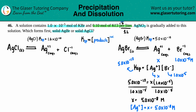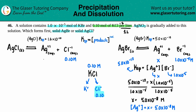For KCl: 0.1 moles per liter, so the molarity is 0.10 M. The Cl⁻ is the common ion we care about. KCl breaks down into K⁺ and Cl⁻ one-to-one, so the Cl⁻ concentration is also 0.10 M. That's the starting concentration for the chloride ion.